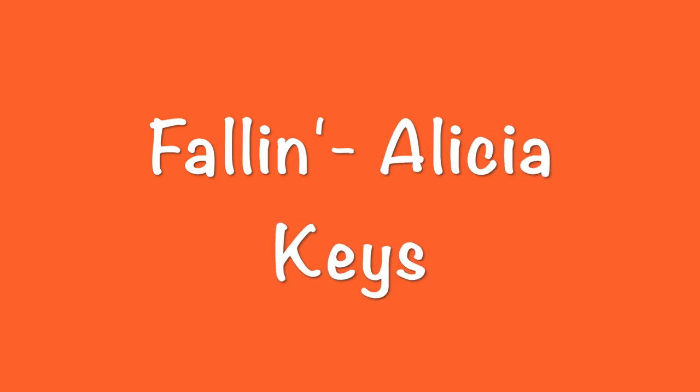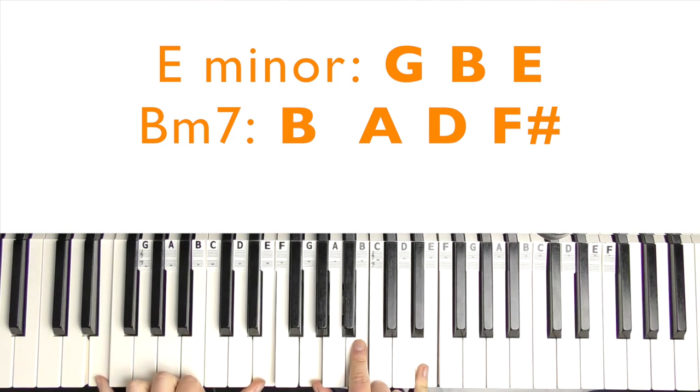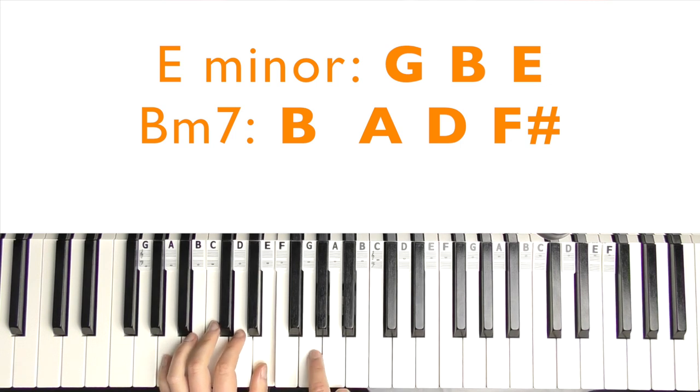So the next one is my personal favourite on the track, which is Fallin' by Alicia Keys, particularly as this is the only piano based one. So the two chords we need is E minor. You can play a single E in the left hand. And then we have first inversion of E minor. So it's G, B, E.